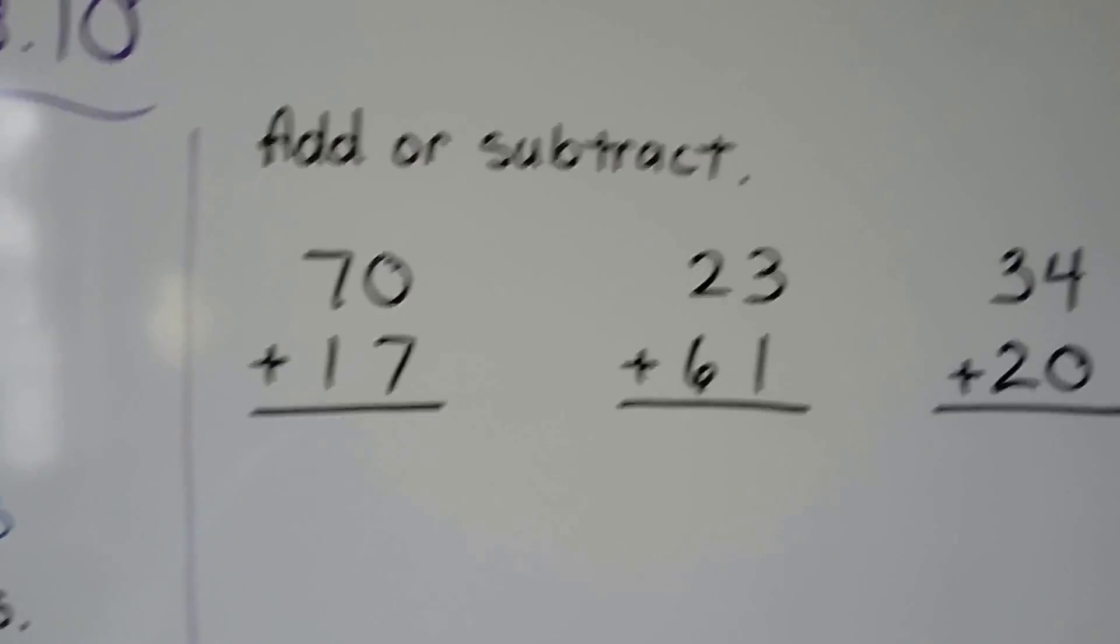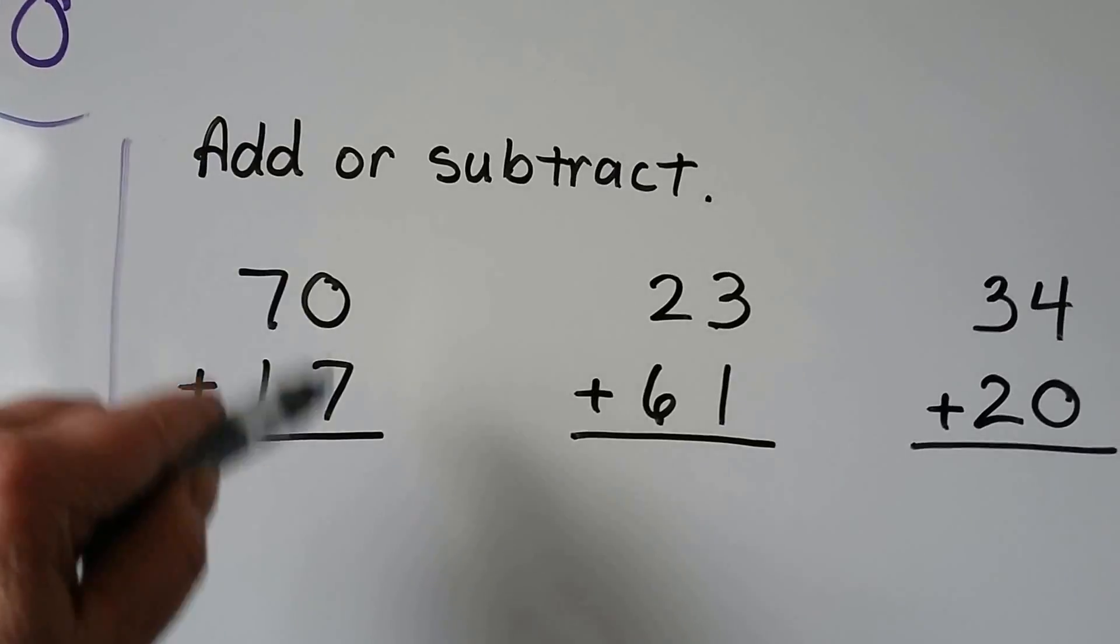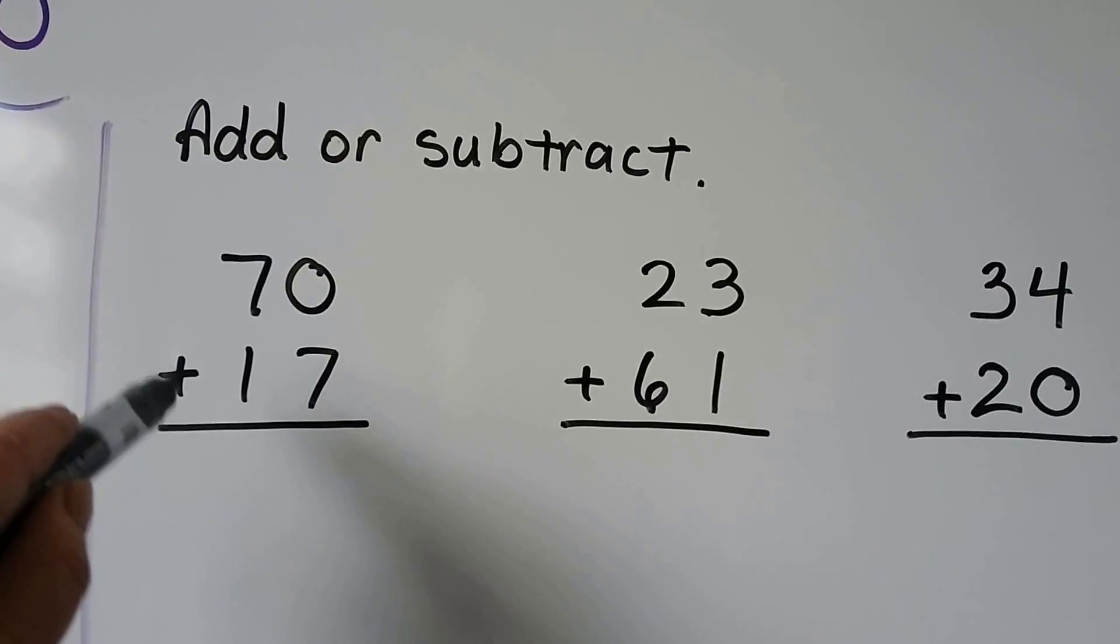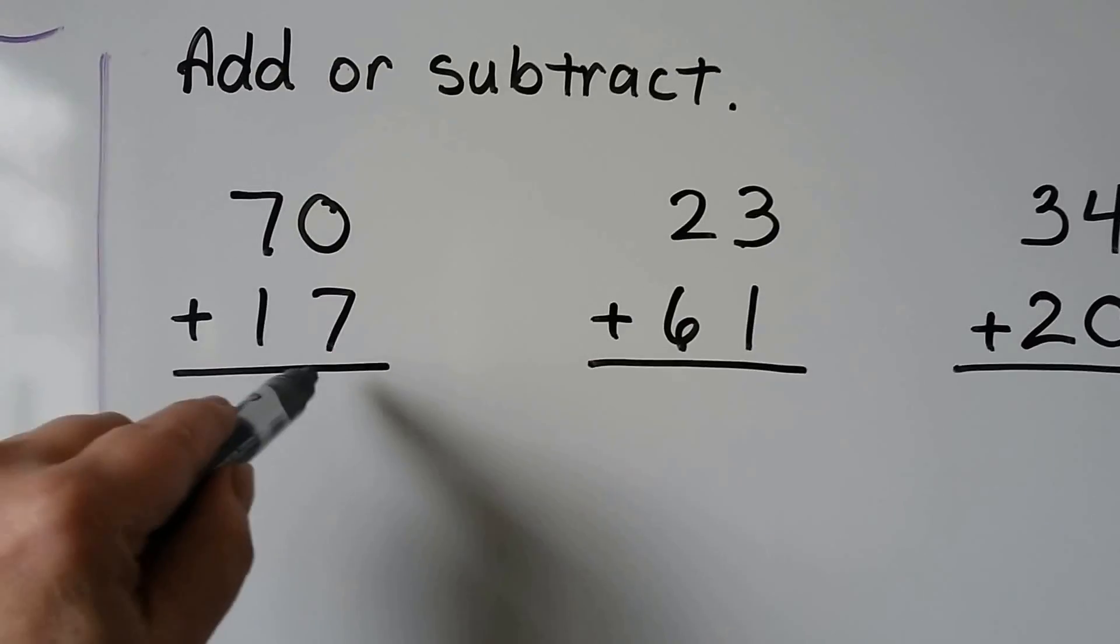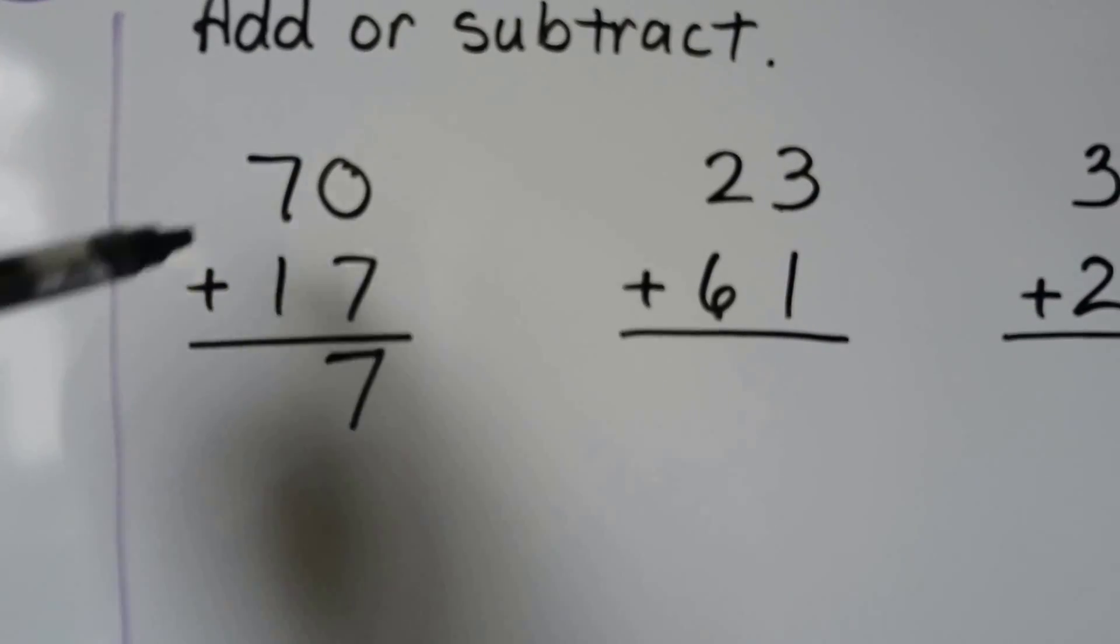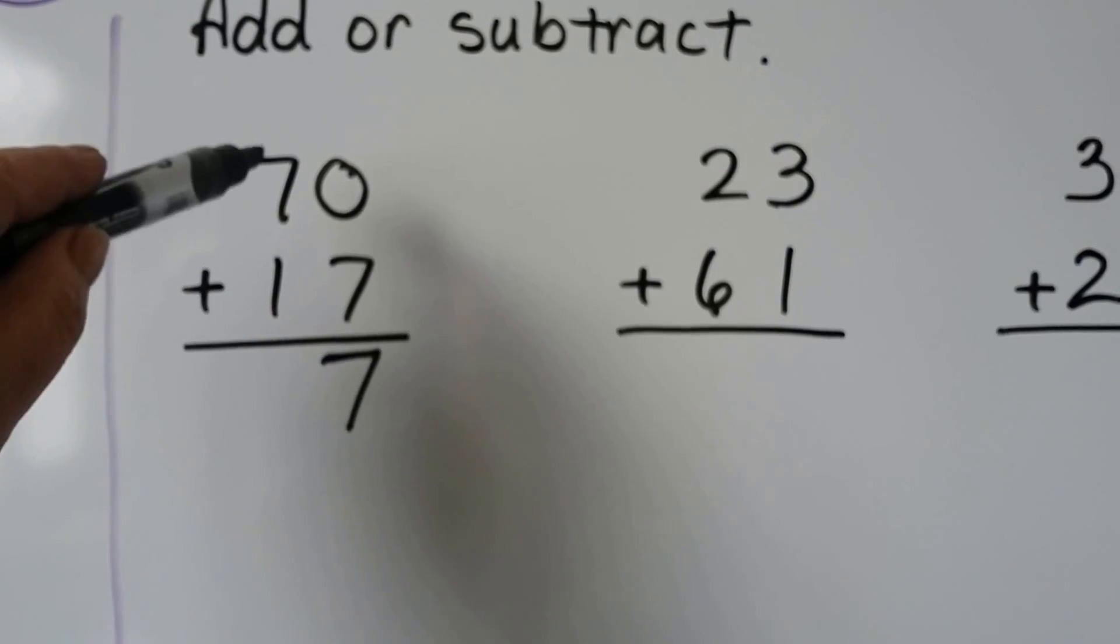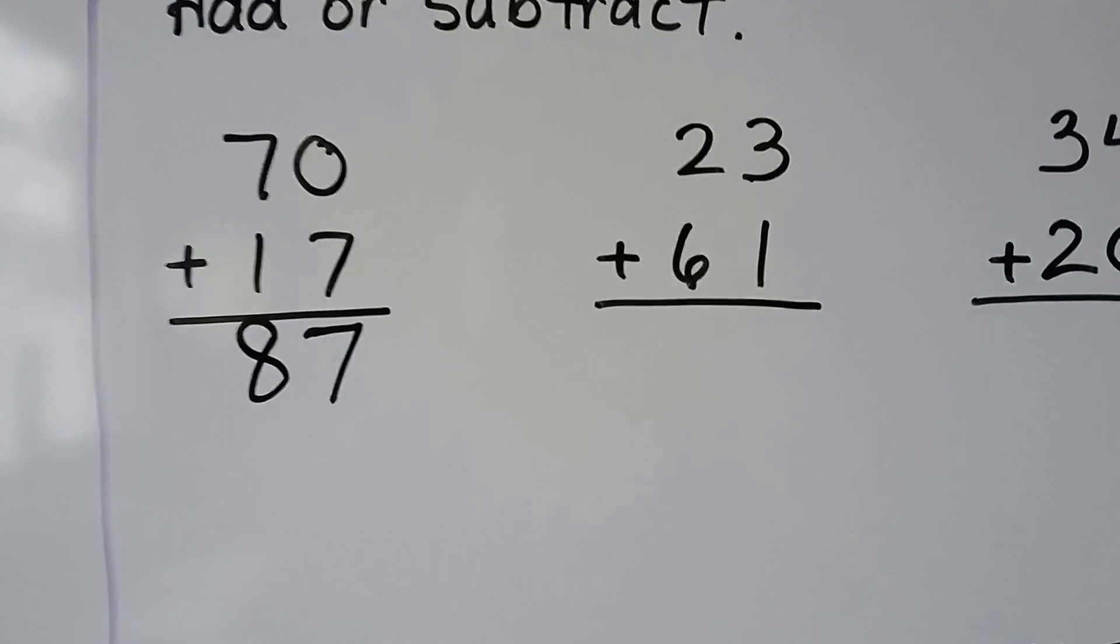So let's add or subtract using the place values. We start with the 1s. Notice that it's a plus, so this one's an addition problem. 0 plus 7. When we add 0 to a number, it stays the same, so that's 7. Now we add the 10s place. 7 plus 1 is equal to 8. It's equal to 87.